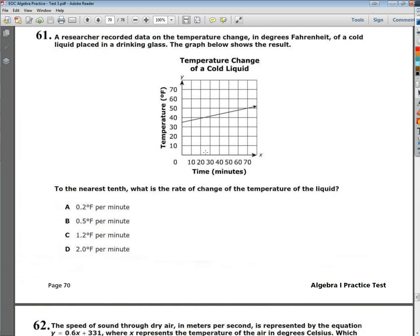You'll notice on the x-axis, the independent variable, we have time in minutes going up by increments of 10. On the other side, the temperature on the dependent variable side of the y-axis is going up by increments of 10 degrees. So minutes and degrees.